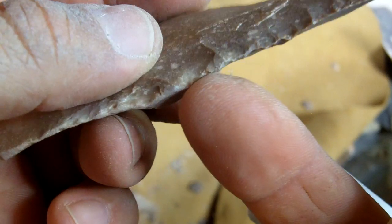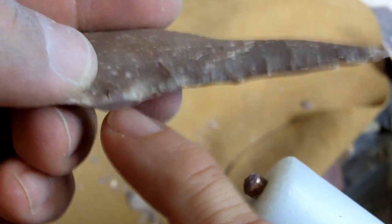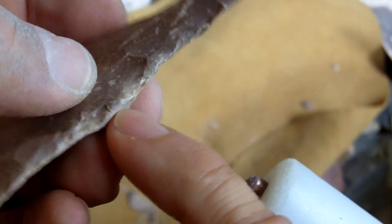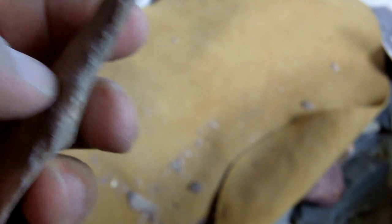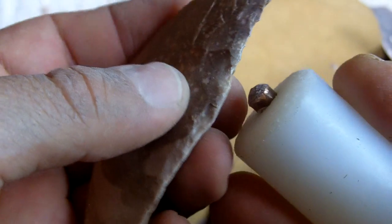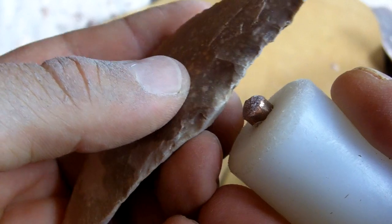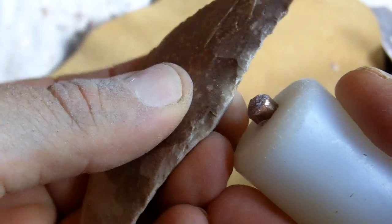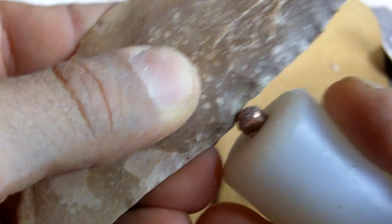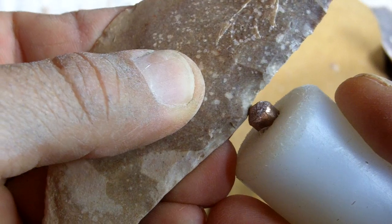A lot of you guys have this issue where you keep pressure flaking or striking and it's not removing the flake. You just got to try to catch an area that's relatively weak and that your tool sits well on. You don't need a lot of force.